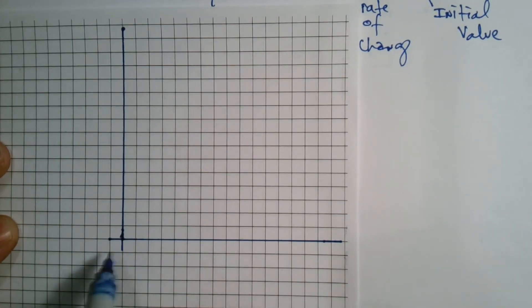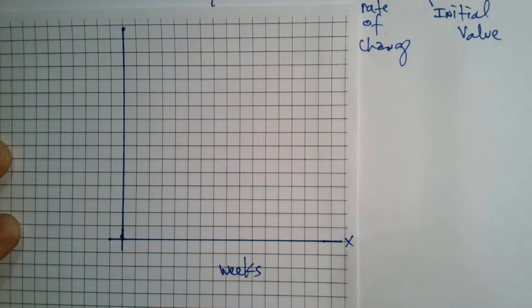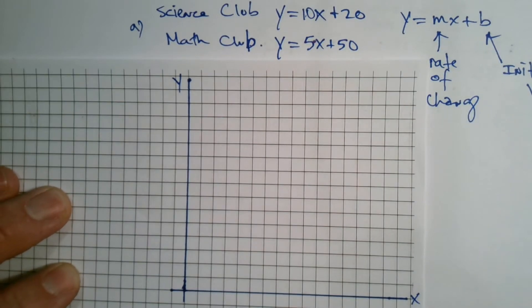So your X value, your X axis, were weeks. That's a good rule of thumb. Time, if you're dealing with time, weeks, months, years, days, seconds, anything that's a time unit is usually your X value. It's usually your horizontal axis. My Y axis, my vertical axis, in this case, is going to be the money saved.